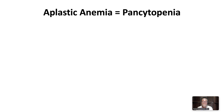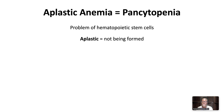Aplastic anemia is a problem with hematopoietic stem cells that are aplastic, or not being formed, leading to anemia, leukopenia, and thrombocytopenia.